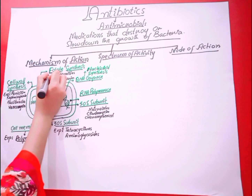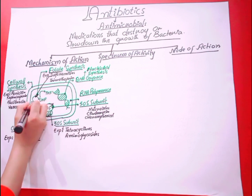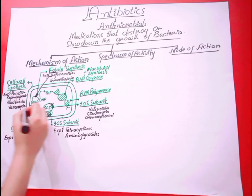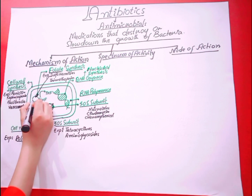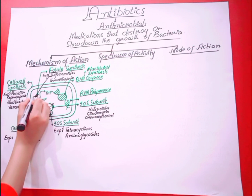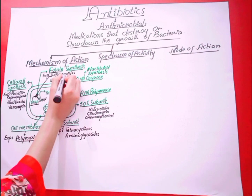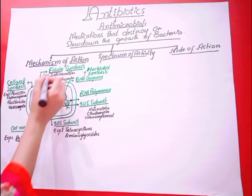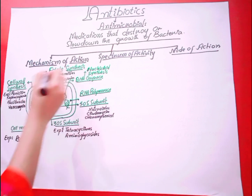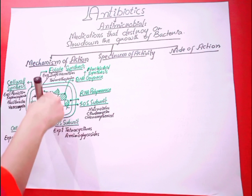Sulfonamides target para-aminobenzoic acid. They inhibit the conversion of para-aminobenzoic acid, so no production of DHF (dihydrofolate) will occur. In this way, sulfonamides stop the folate synthesis of the bacterial cell, causing cell death.